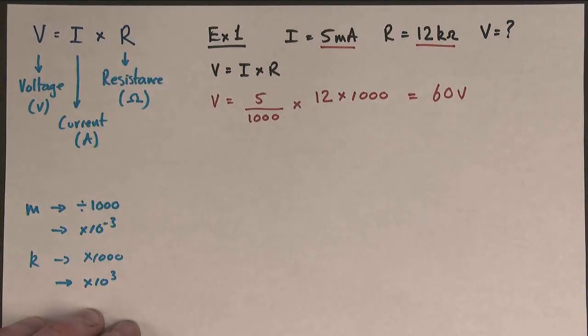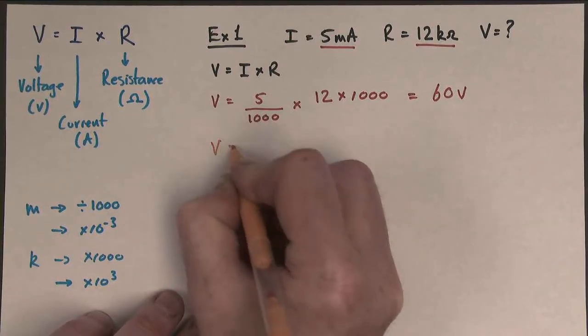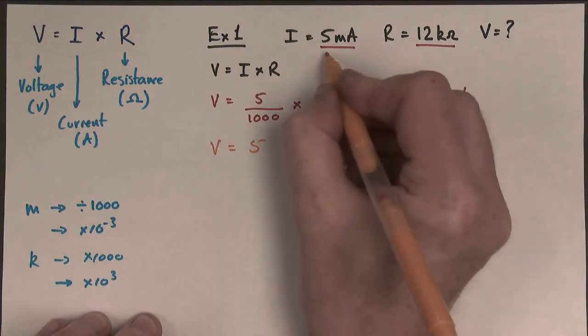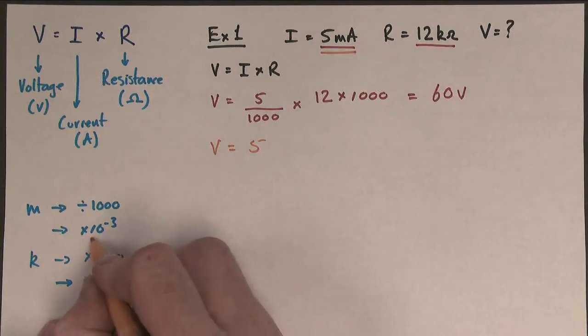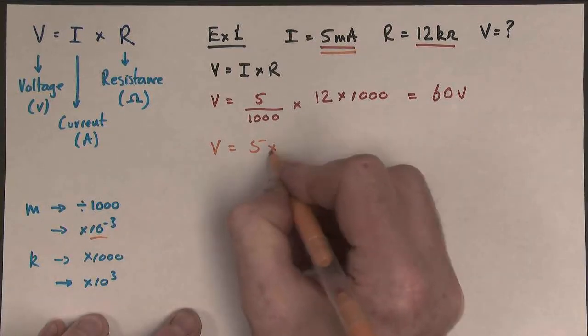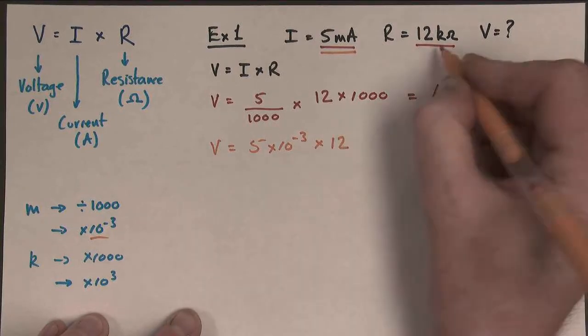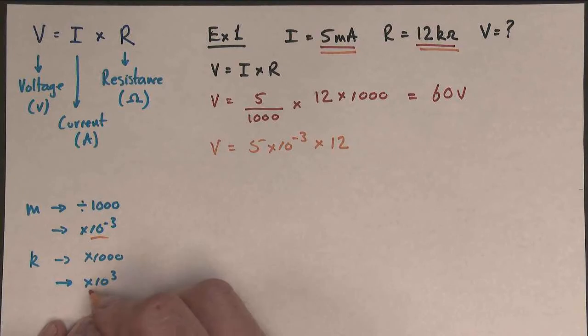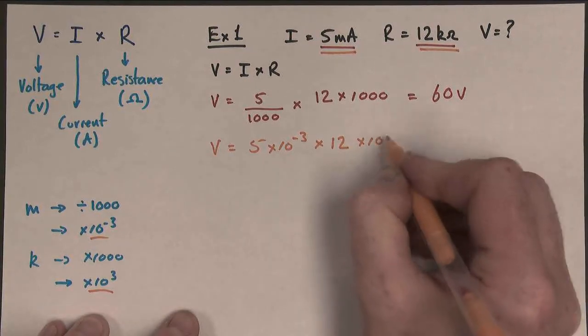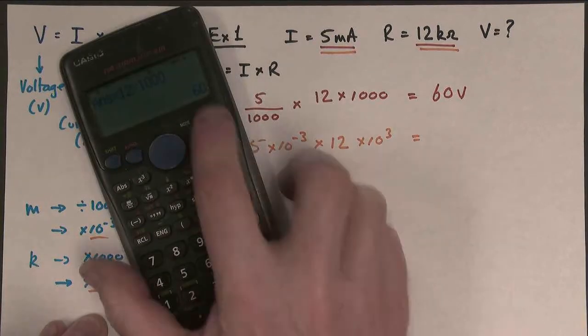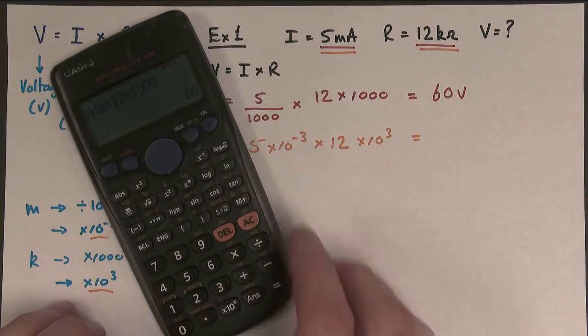But that's not the only way we can do it. We can use standard form as well. We can do V equals 5, and this time the milli is going to be 10 to the minus 3. So it's 5 times 10 to the minus 3, times by 12. So the kilo-ohms this time is going to be times 10 to the 3, times 10 to the 3. And we hope that we should get the same answer.